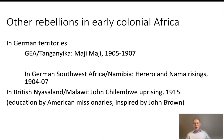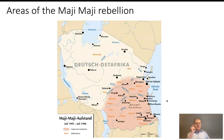Africans continued to resist in ways small and large — resisting tax collection, refusing forced labor, and sometimes in major uprisings and rebellions. The Maji Maji Rebellion covered almost half the territory of German East Africa, with tens of thousands of participants, which is indicative of how bad colonial rule was in that territory. Next week we'll talk more about colonial rule, looking specifically at a settler colony in South Africa and other issues.